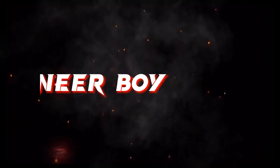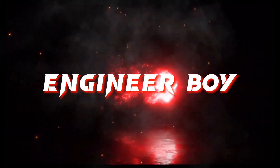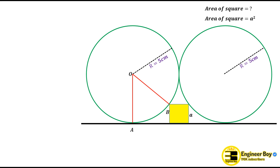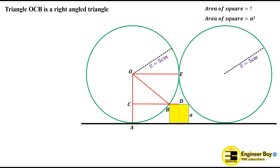For this solution, I'll draw some extra geometry — lines OB, OA, OE, and CD. As you can see, we get a right angle triangle OCB.